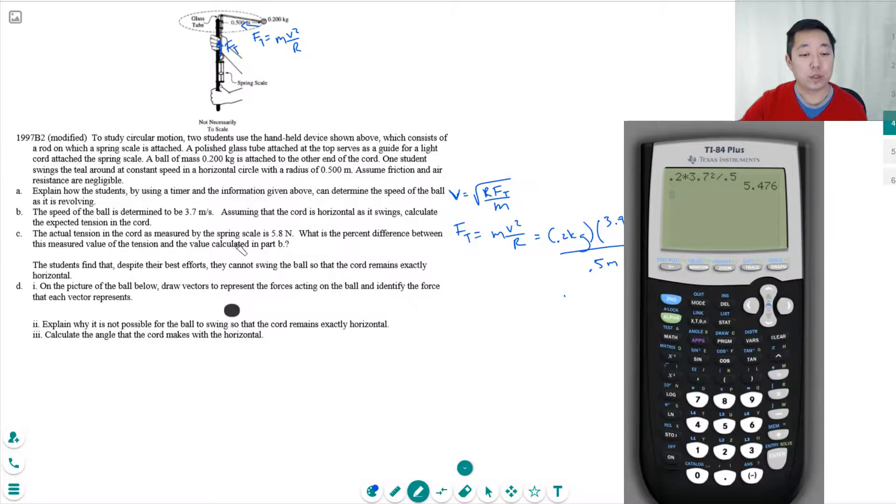The actual tension in the cord is measured by the spring scale as 5.8 Newtons. What is the percent difference between the measured value and the calculated value? So percent error is... Percent difference would be 5.8 minus 5.476 divided by 5.476. So the actual value is 5.8 minus 5.476 divided by 5.476.